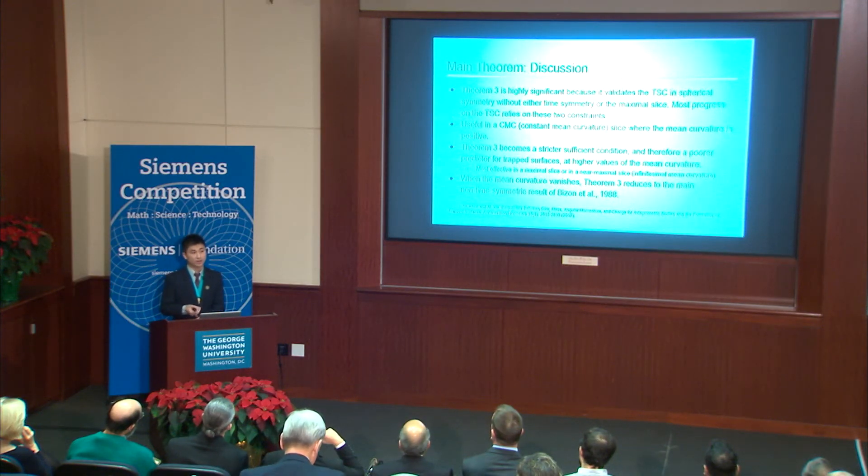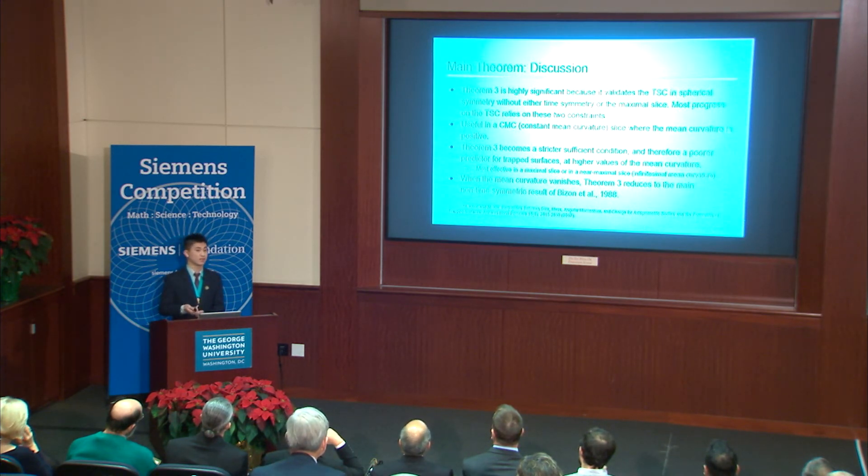And in fact, since we can choose the sign of the mean curvature over a time slice based on which time direction we use as a reference point, theorem three is actually viable in any arbitrary CMC slice. Also, in my proof of theorem three I used a second term that was proportional to the mean curvature, which vanished in the final result. So we can see that theorem three becomes a strict sufficient condition and therefore a poor predictor for trapped surfaces when the mean curvature takes a very high value. Theorem three is most effective at predicting trapped surfaces in the maximal slice or near-maximal slice where the mean curvature takes an infinitesimally small value. Finally, we can verify that when the mean curvature vanishes and we are working in a maximal slice, theorem three reduces to the main result of Bison et al. in a maximal slice.